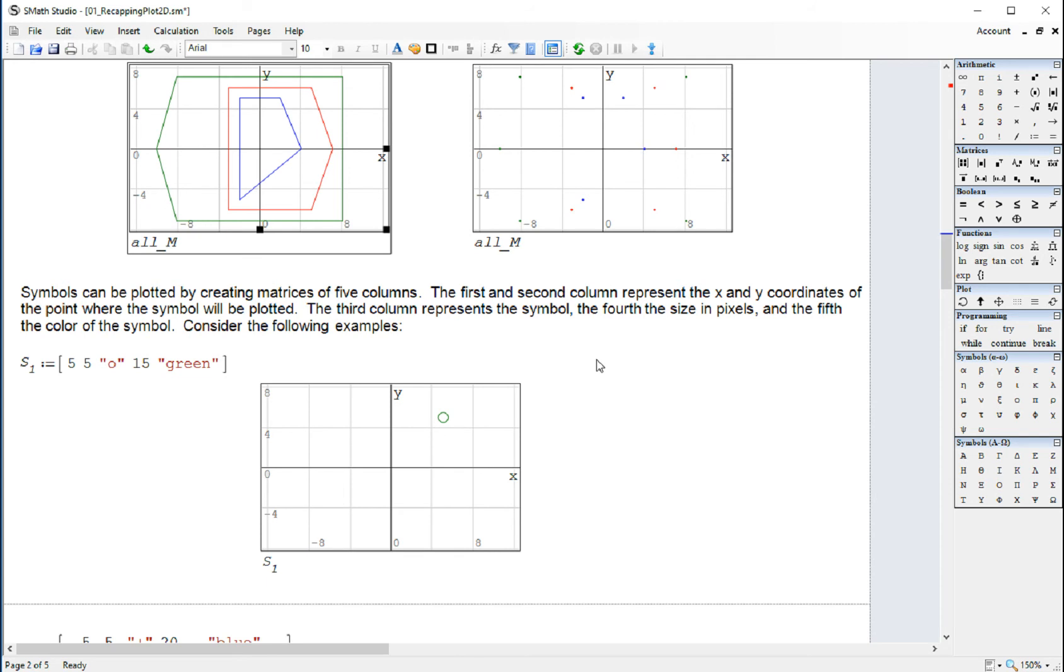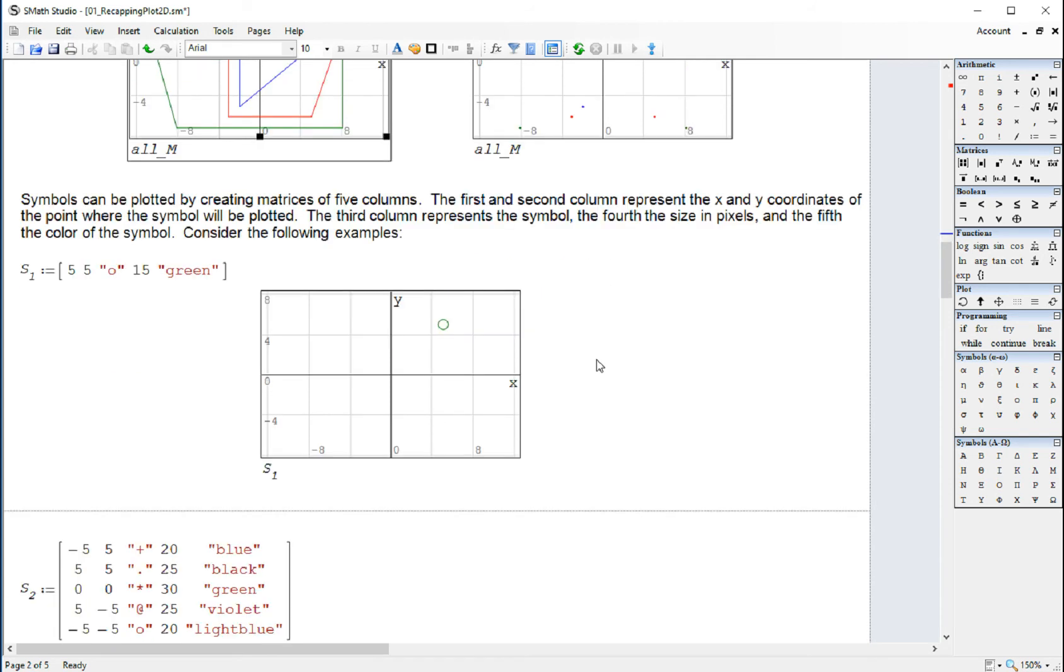Another thing you can do is to enter a symbol in the graph, in which case, suppose that you want to enter a single symbol, you're going to enter a vector, a row vector with five elements. And the first two is the coordinates where you're going to start the symbol. The next one is the symbol that's going to be in quotes. The next one is the size of the symbol. And the next one is the color.